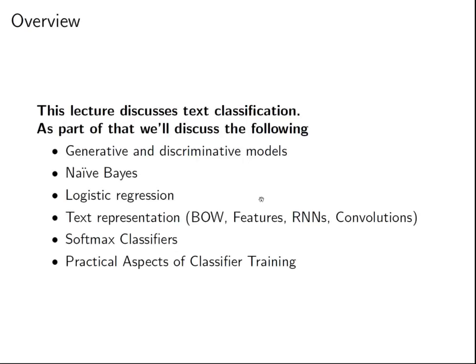Roughly, a couple of things we'll talk about today: generative and discriminative models. We'll look a bit at Naive Bayes and Logistic Regression, which are text classification models — or general classification models — that we would have used independent of deep learning. Then we'll look at some different ways of representing text, softmax classifiers, and also some practical aspects of classifier training, all under the umbrella of deep learning for NLP.